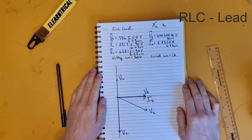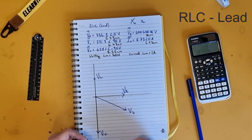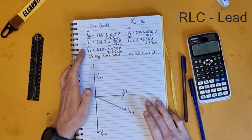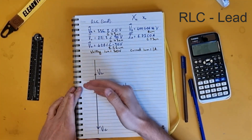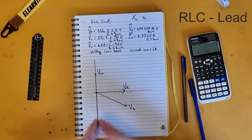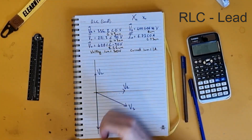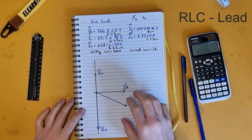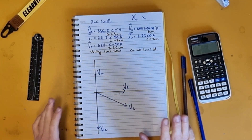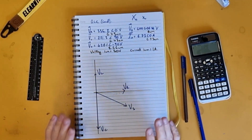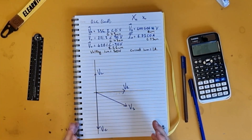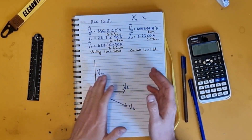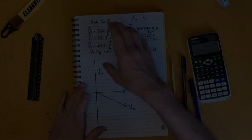Now the last one to draw is our current. That's all four phasor diagrams drawn. For the RLC leading phasor diagram, the supply voltage points downward. Anytime you've got a leading circuit — where capacitive reactance is bigger than inductive reactance — it should look roughly like this. I hope you found that useful. If you're looking for more on the calculations and how you get these numbers, check out my other videos where I go into detail on that.